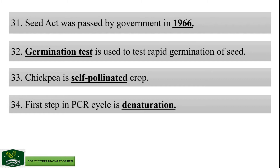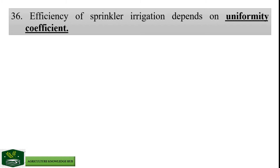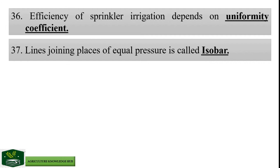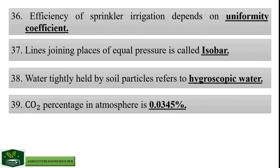Site of protein synthesis is ribosome. Efficiency of sprinkler irrigation depends on uniformity coefficient. Lines joining places of equal pressure are called isobar. Water tightly held by soil particles refers to hygroscopic water. Carbon dioxide percentage in atmosphere is 0.0345 percent.